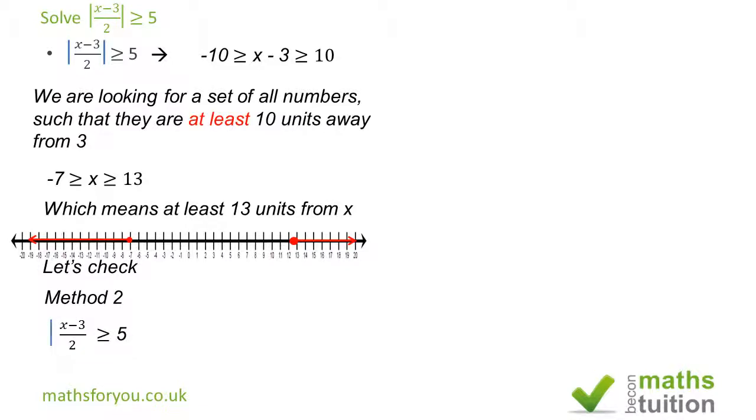Method 2. If we now square both sides, and that's what we've got here. Then, if we square 2, you get 4. So if we multiply both sides by 4, we end up with (x minus 3) all squared is greater than or equal to 25 times 4. 25 times 4 is 100.